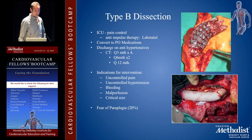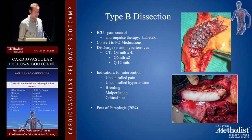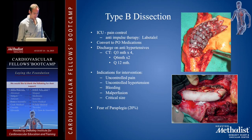For type B dissections, the treatment is ICU pain control and anti-impulse therapy. Labetalol or Esmolol are good options. You eventually want to convert to PO medications as they transfer to the floor. On discharge, they leave on antihypertensives, and follow-up with CT scan every 3 months for four scans, then every 6 months for two scans, then yearly after that. Indications for intervention include uncontrolled pain, uncontrolled hypertension, bleeding, malperfusion, and critical size.